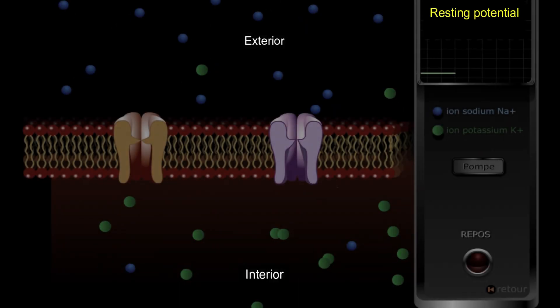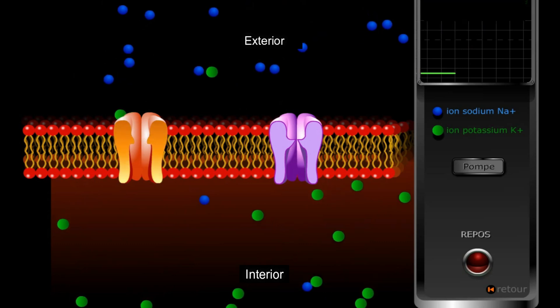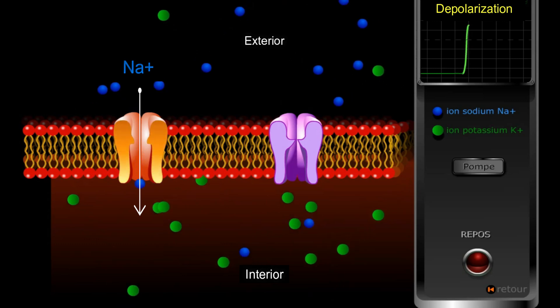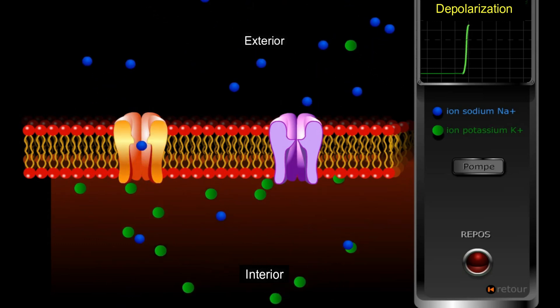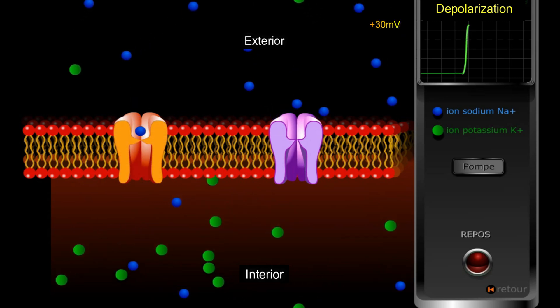In depolarization stage, the Na plus gated channels open, and Na plus ions enter into the axon. This is revealed by the increase of the membrane potential to plus 30 millivolts.